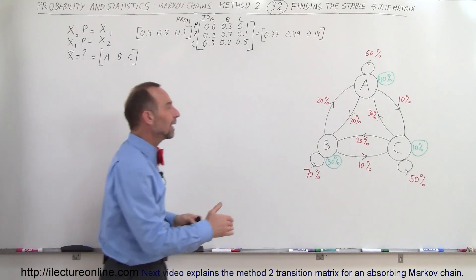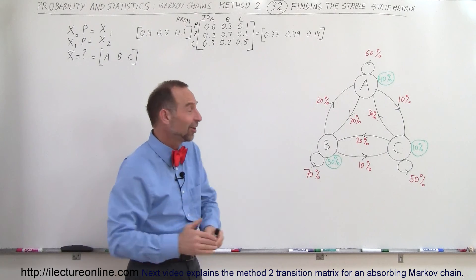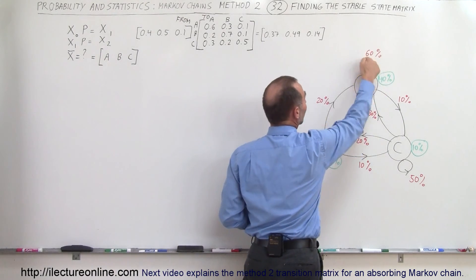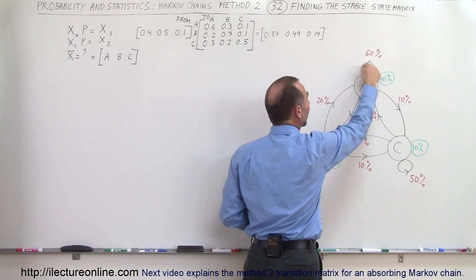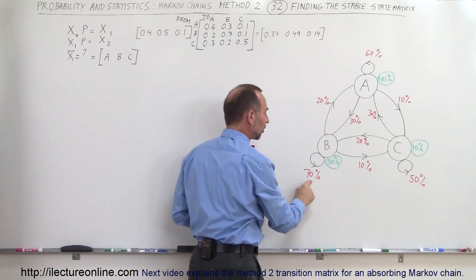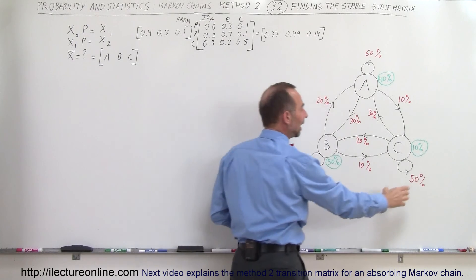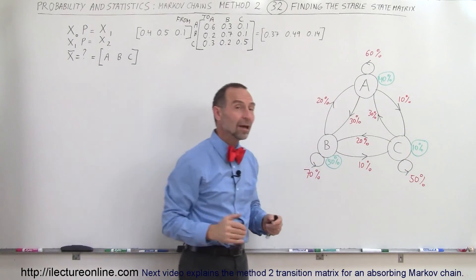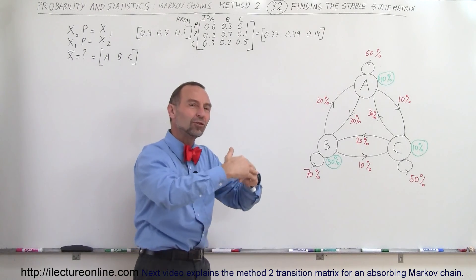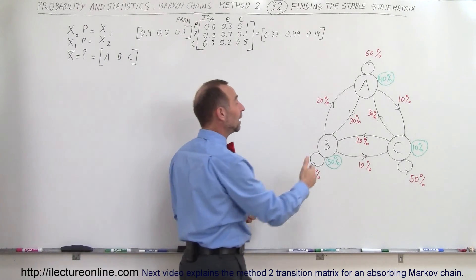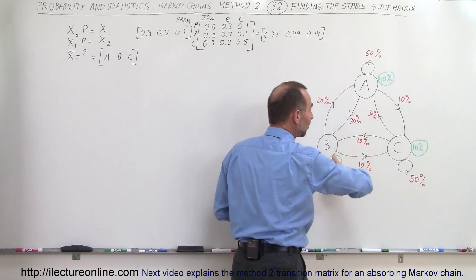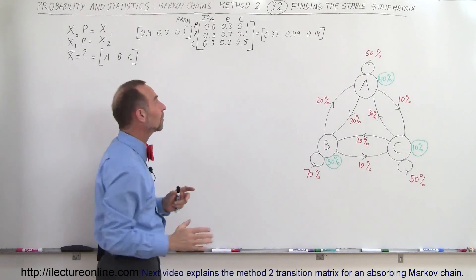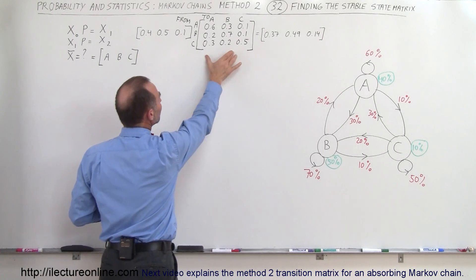Not all customers stay in the same stores. Some do — for example 60% of the customers in store A stay in store A, 70% in store B stay in store B, and 50% in store C stay in store C. But other customers move to a different store every week. All the red numbers here represent the percentage of customers going from one store to the other, captured in what we call the transition matrix.